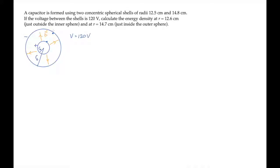The energy density, lowercase u, equals epsilon naught e squared over 2. In this case, we don't know the value of the electric field, but we do know that the voltage, the line integral of the electric field, is 120 volts. So I'll use this expression to help us find the magnitude of the electric field at those two locations.